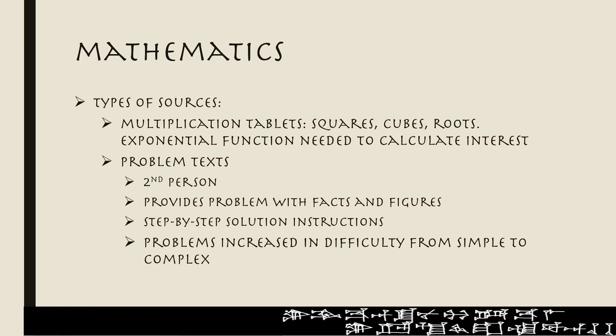When it comes to mathematics there are several types of sources. There are multiplication tablets — they show squares, cubes, and roots. Their exponential function is used to calculate interest, which is of course a very important thing for Mesopotamian scribes. And then there are problem texts, which are generally written in the second person. They provide problems with facts, figures, and step-by-step solution instructions. These were part of the scribal curriculum, and the problems — there were often hundreds of them — increased in difficulty from simple to complex, as you would expect in a pedagogical text.